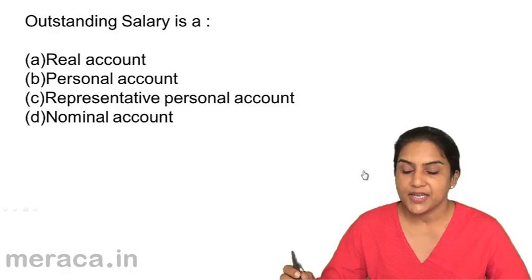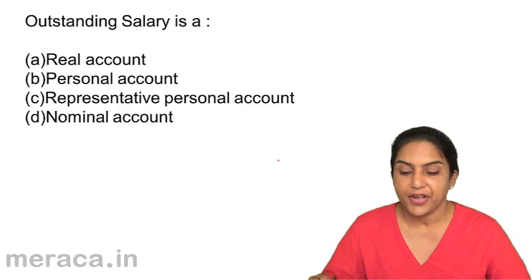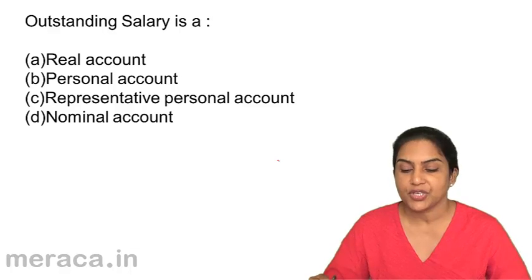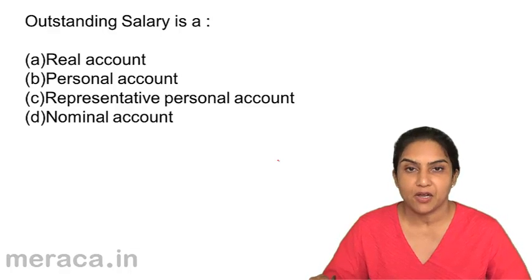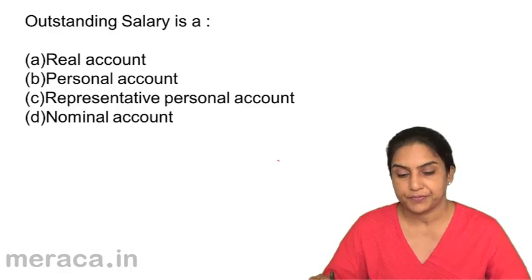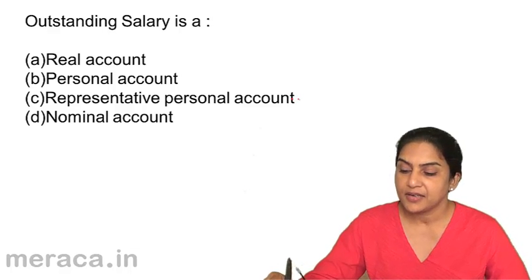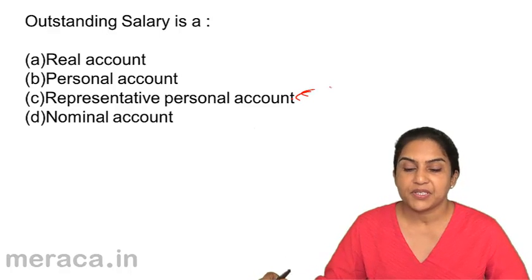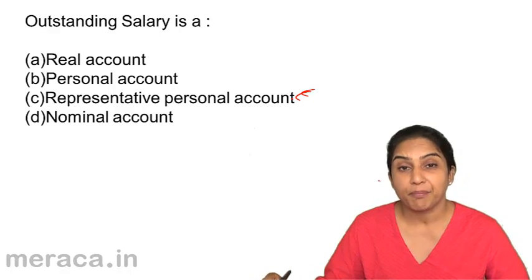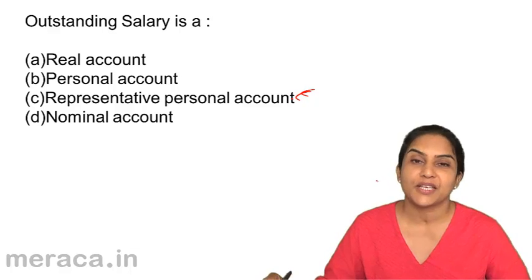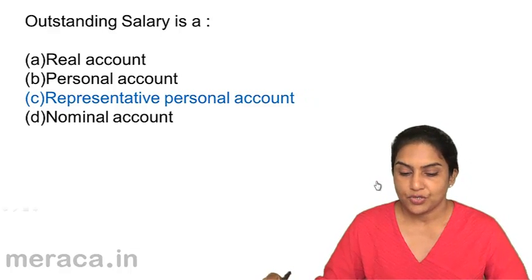Question 2: Outstanding salary is — A: a real account, B: personal account, C: representative personal account, D: nominal account. Outstanding salary is a representative personal account, representing the account of the employee to whom salary is due. So the correct answer is C.